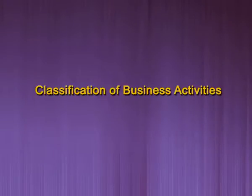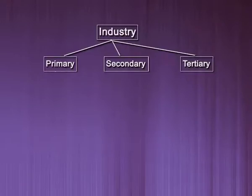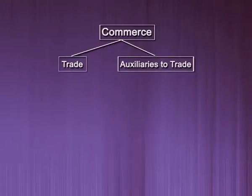Today we will cover the remaining chapter: the classification of business activities. Business activities can be divided into two ways — first is industry and another is commerce. Industry can further be divided into three ways: primary industry, secondary industry and tertiary industry. Similarly, commerce can be divided into trade and auxiliaries to trade.